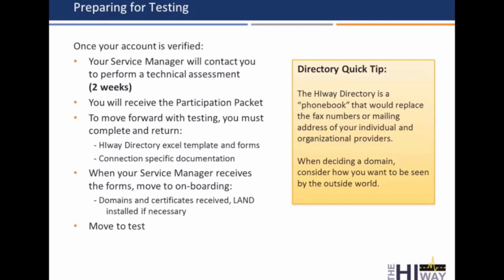Once that's confirmed, you'll get a participation packet that's going to include some other information that you'll need to fill out, and it'll give you what you need to know about that particular connection type. It's going to include that provider directory spreadsheet. You'll need to complete that documentation to move forward.